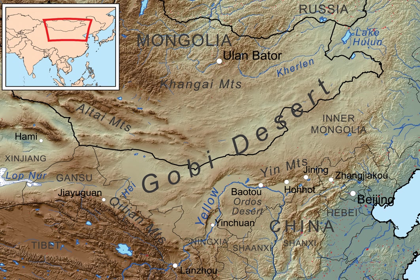The Gobi Desert is the source of many important fossil finds, including the first dinosaur eggs. Despite the harsh conditions, these deserts and the surrounding regions sustain many animals, including black-tailed gazelles, marbled polecats, wild Bactrian camels, Mongolian wild ass, and sandplovers.